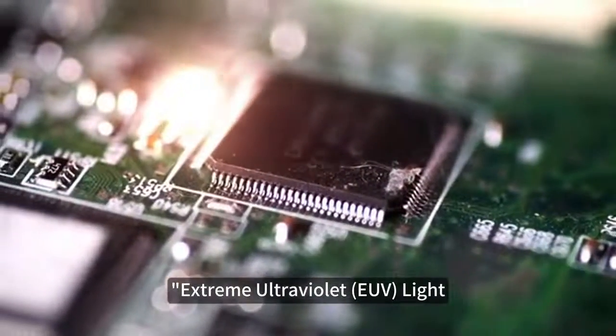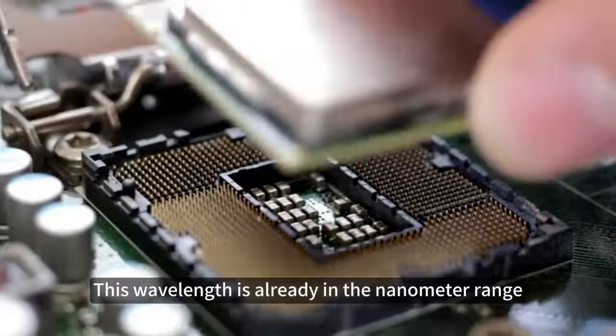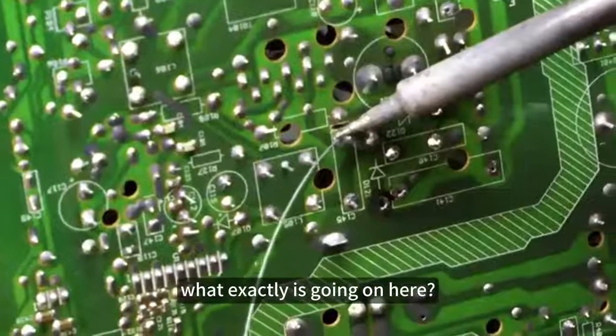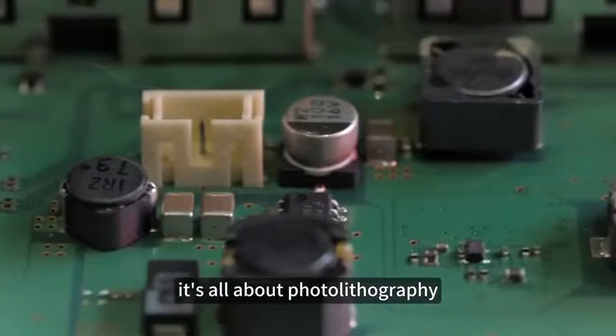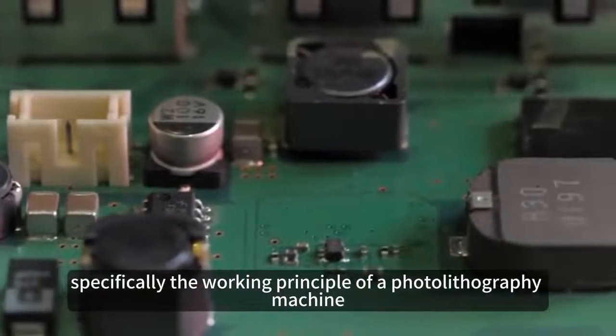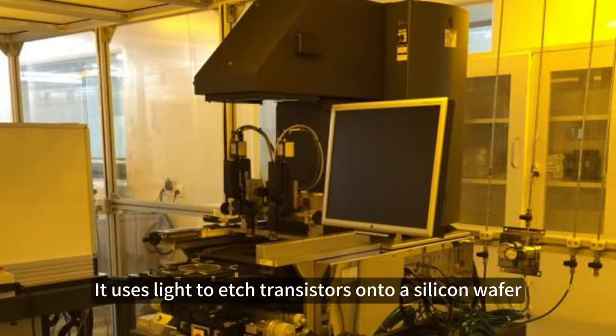Extreme ultraviolet EUV light, this wavelength is already in the nanometer range. It's all about photolithography, specifically the working principle of a photolithography machine. It uses light to etch transistors onto a silicon wafer, hence the name photolithography.